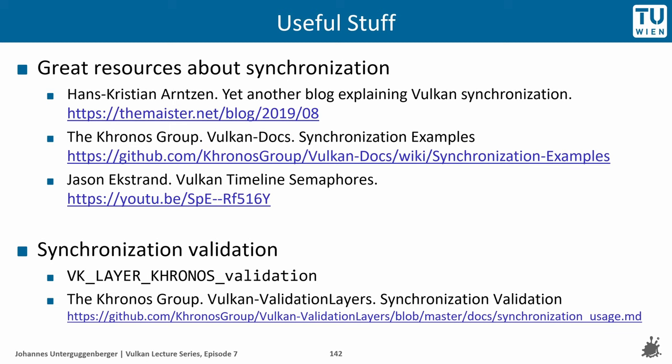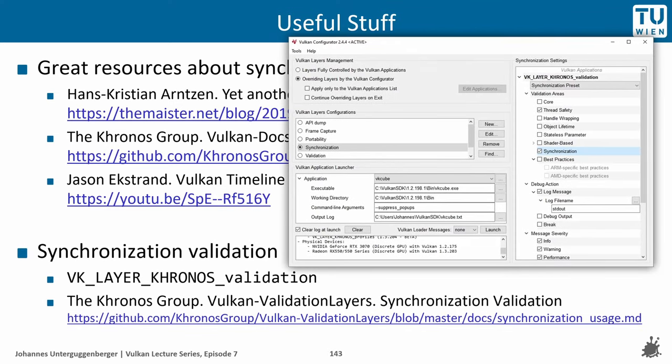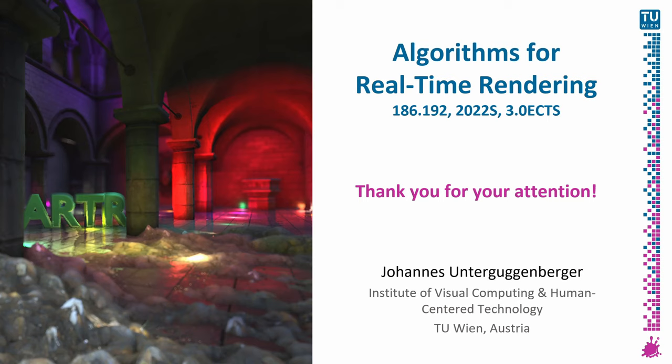Since synchronization in Vulkan is such a broad and comprehensive topic, further great resources are linked on the slides. There is also a validation layer very helpful in spotting potential synchronization problems in your application, which can be enabled in the Vulkan configurator tool. This concludes episode 7 of our Vulkan lecture series, where we discussed all the synchronization methods Vulkan provides. Synchronization can be quite a challenge to get right, but once you grasp it, your application can have fine-grained control over your devices — leading to correct results and awesome performance.